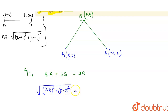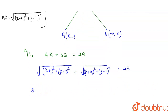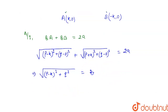So QA plus QB equals: the square root of (p minus k) squared plus q squared, plus the square root of (p plus k) squared plus q squared, is equal to 2a.